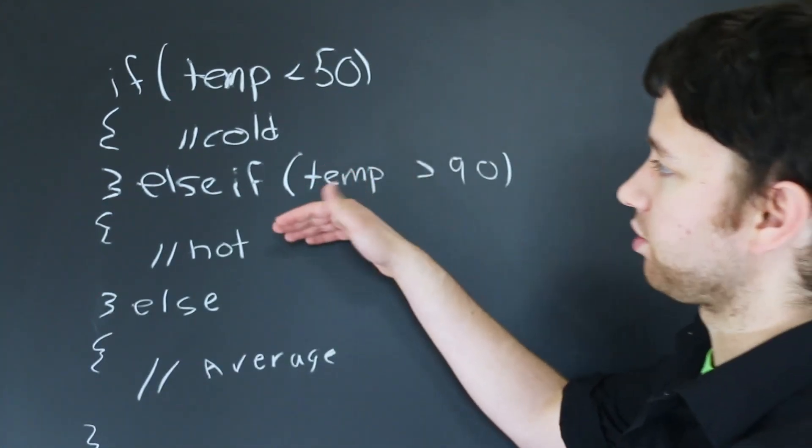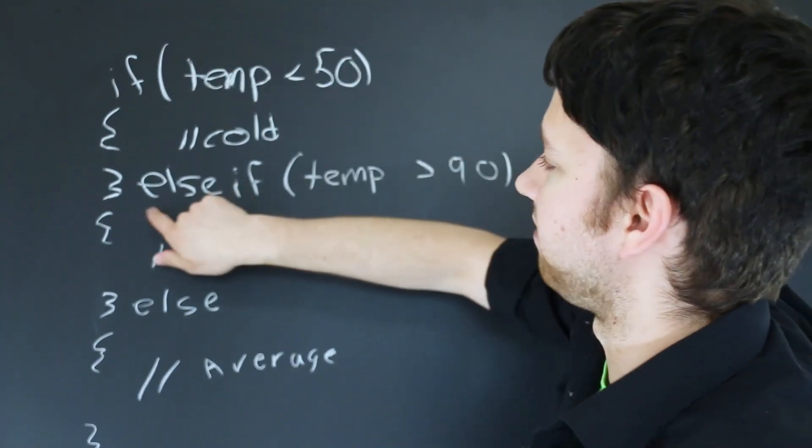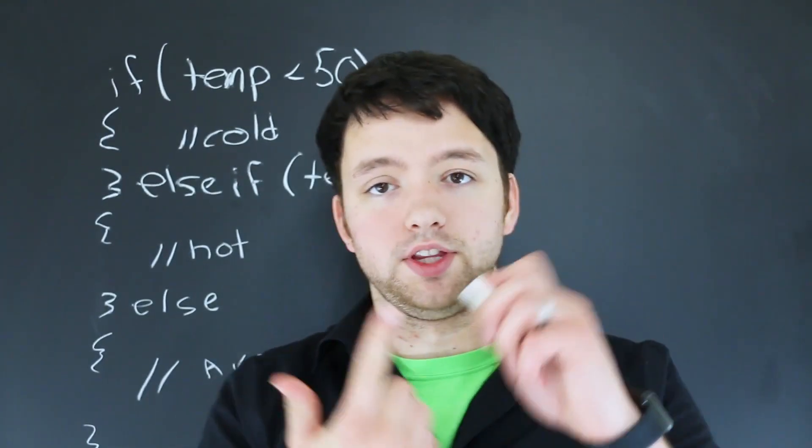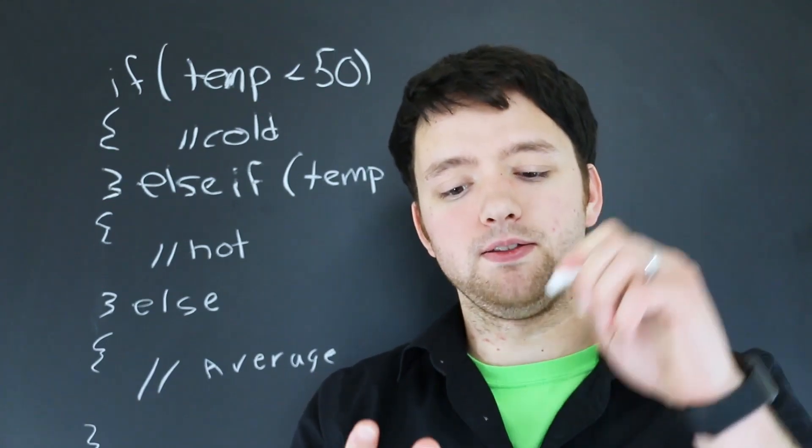So this is how an else if is structured. It looks exactly like the if where you have the parentheses. The only thing is you have else space if. So basically we've given three variations. The if with no else. If with an else. And then the else if.